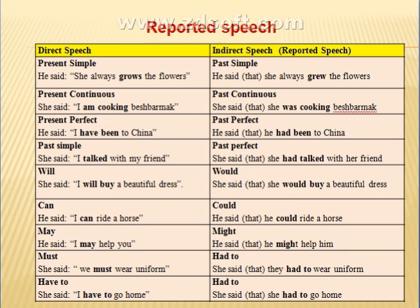Present simple changes into past simple. Present continuous into past continuous. Present perfect and past simple into past perfect. Will becomes would, can becomes could, may becomes might, must and have to become had to. These are the modal verbs we should change.